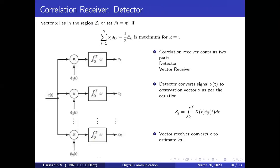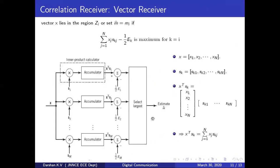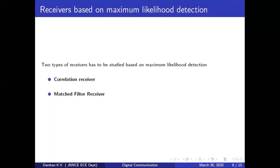Looking at the block diagram: for all messages, some computation is performed and the largest is selected. This is a new topic. You need to design two types of receivers based on maximum likelihood detection. The first is called the correlation receiver and the second is called the matched filter receiver.